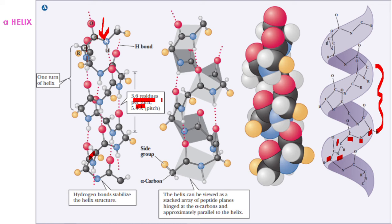The helix can be viewed as a stacked array of peptide planes hinged at the alpha carbons, and approximately parallel to the helix axis. Remember, they are hinged at the alpha carbon, which means they are rotating with respect to the alpha carbons. Here you can see the alpha carbons very clearly. The alpha carbon is the hinge around which the other planes can rotate.